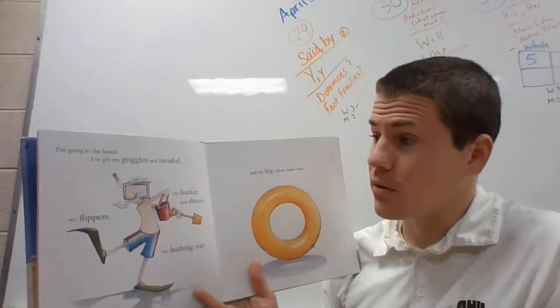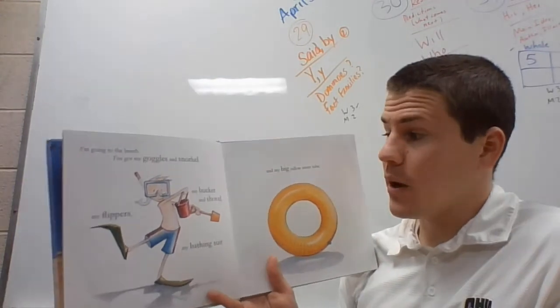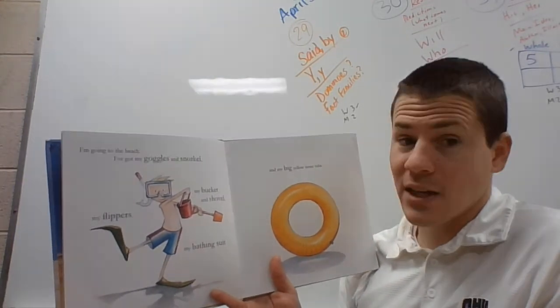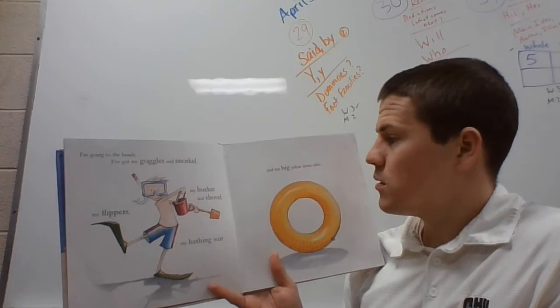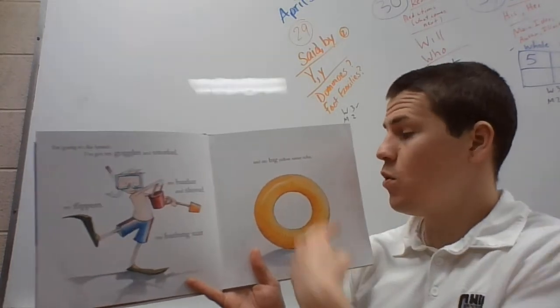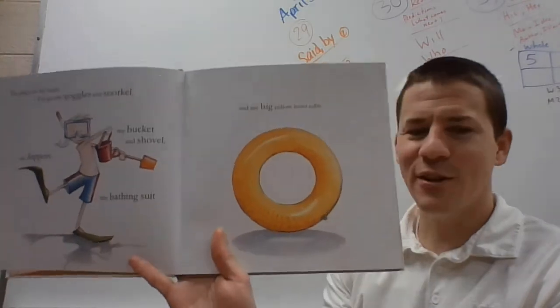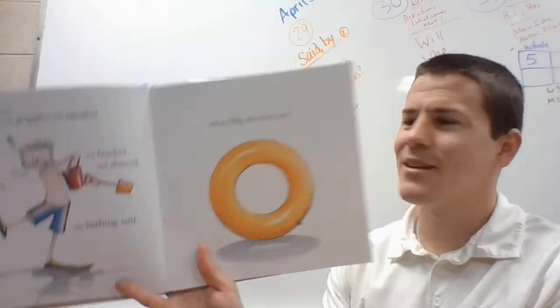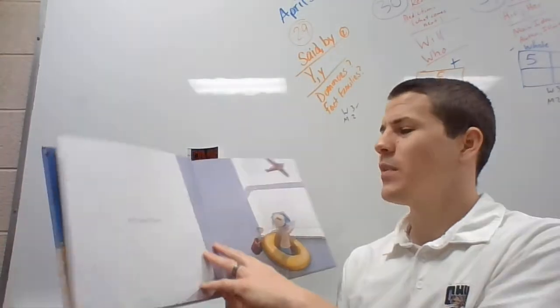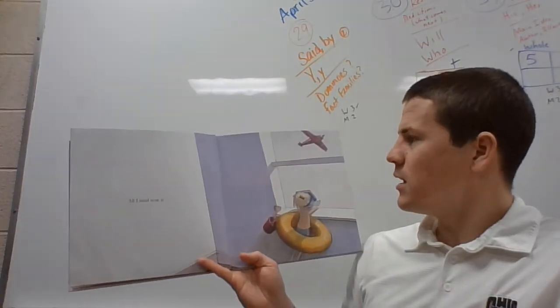I'm going to the beach. I've got my goggles and snorkel, my bucket, my flippers and shovel, my bathing suit, and my big yellow, not a donut, inner tube.